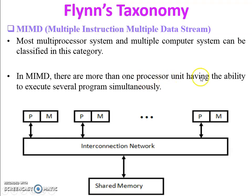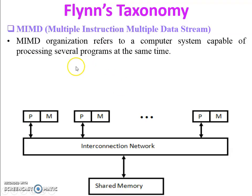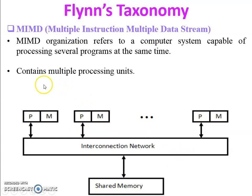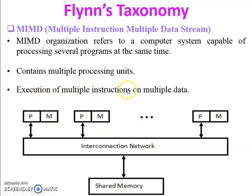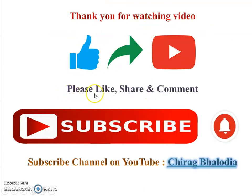In MIMD there are more than one processor unit having the ability to execute several programs simultaneously. MIMD organization refers to computer systems capable of processing several programs at the same time. One process is divided into small tasks and all the different small tasks are given to individual processors. It contains multiple processing units executing multiple instructions on multiple data. Thank you for watching this video — please like, share, comment, and subscribe to my channel on YouTube, Chirag Baladya. Press the bell icon to get new video notifications.